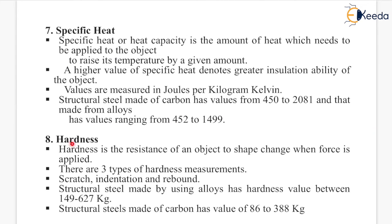Next is hardness. Hardness is the resistance of an object to shape change when force is applied. There are three types of hardness measurements: scratch, indentation, and rebound. Structural steel made using alloys has a hardness value between 149 to 627 kg, and structural steel made of carbon has values of 86 to 388 kg.